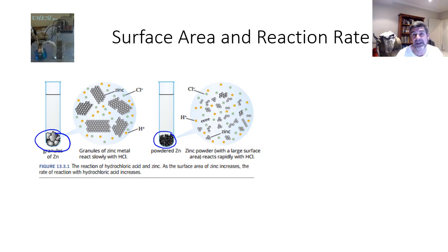The granules of zinc have a larger size, and therefore they tend to react very slowly with the hydrochloric acid. Whereas the powdered zinc, which has a larger surface area, reacts much more rapidly with the hydrochloric acid.